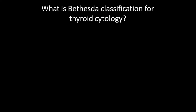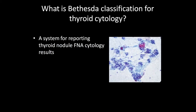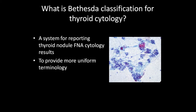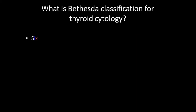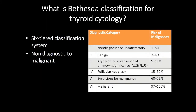The Bethesda classification for thyroid cytology is a system for reporting thyroid nodule FNA cytology results. The main aim was to develop a uniform system of reporting that would facilitate communication among cytopathologists, endocrinologists, surgeons, radiologists, and other healthcare providers, and to allow easy and reliable sharing of data from different laboratories for national and international collaborative studies. It is a six-tiered classification system, with categories ranging from non-diagnostic category one to malignant category six.